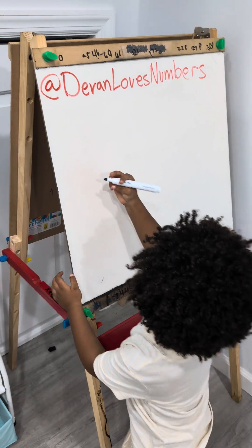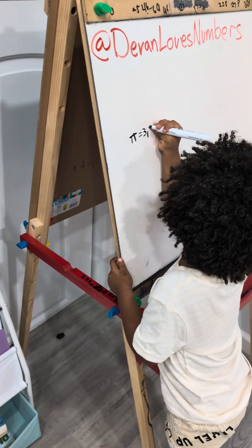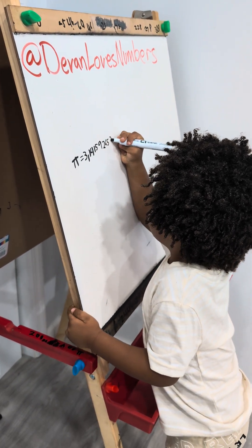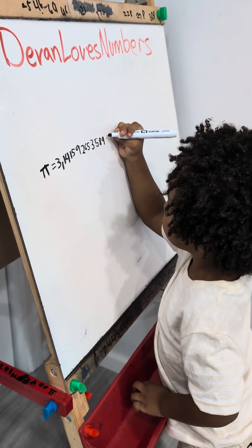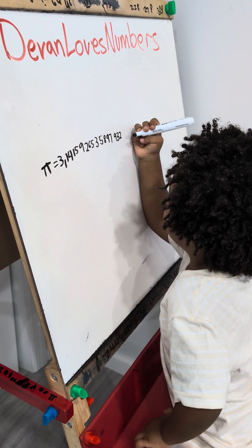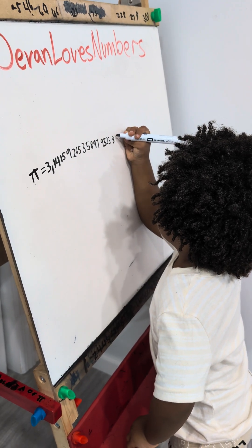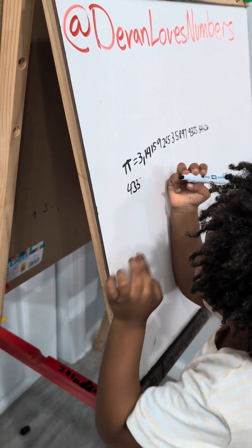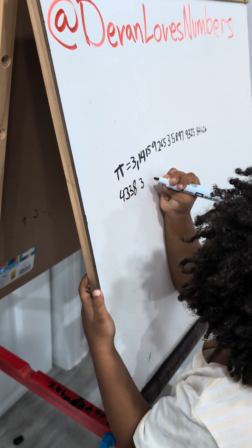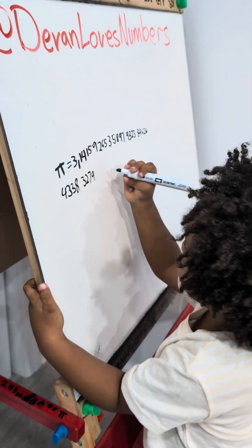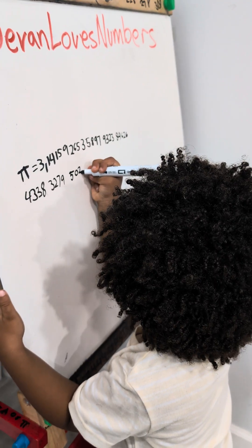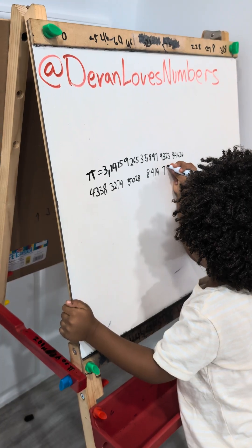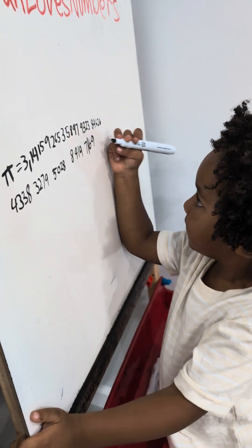Pi equals 3.14159265, 3, 5, 8, 9, 7, 9, 3, 2, 3, 8, 4, 6, 2, 6, 4, 3, 3, 8, 3, 2, 7, 9, 5, 0, 2, 8, 8, 4, 1, 9, 7, 1, 6, 9, 3, 9, 9, 3, 7.